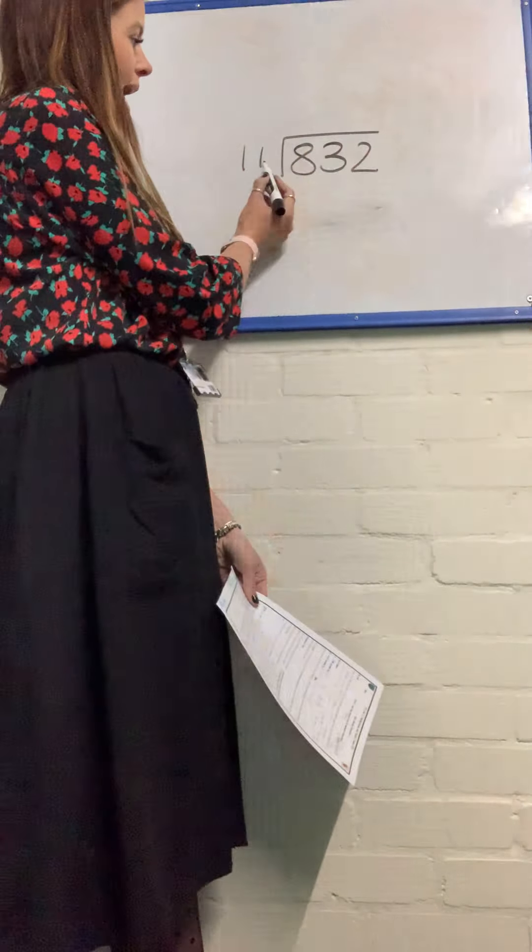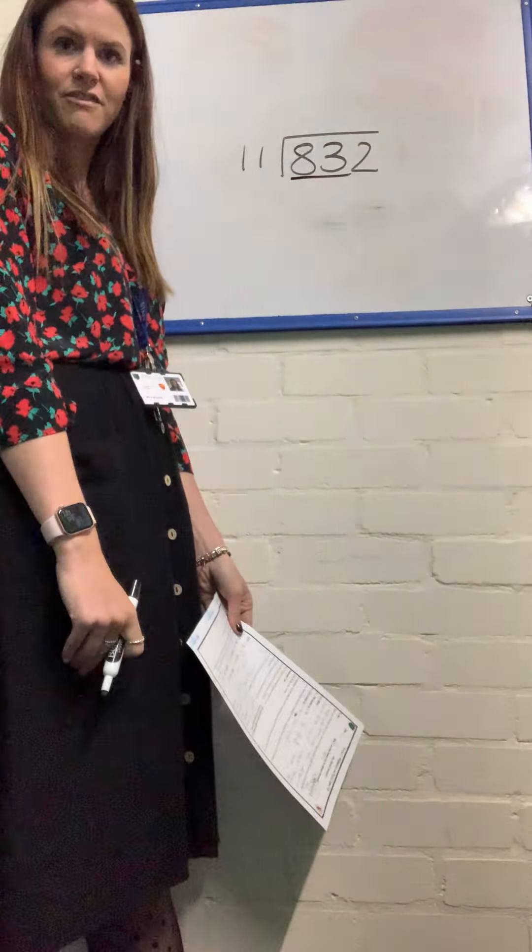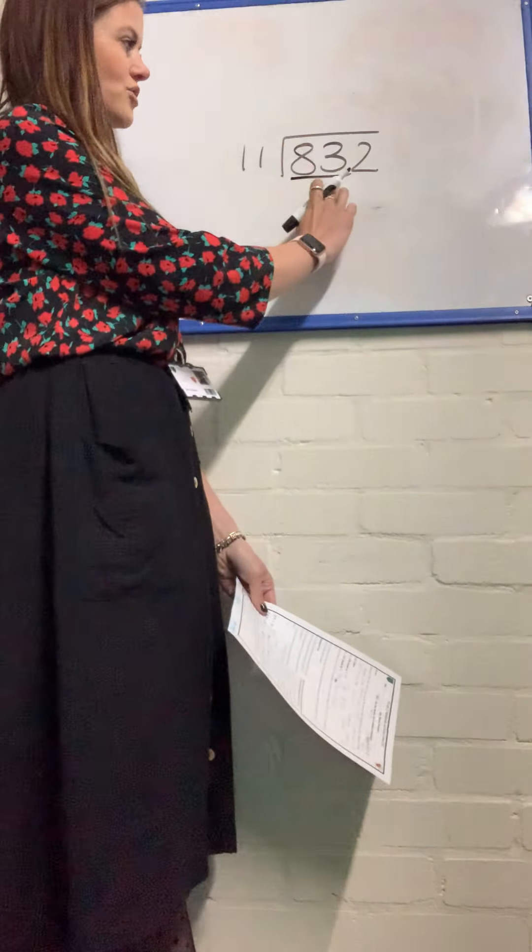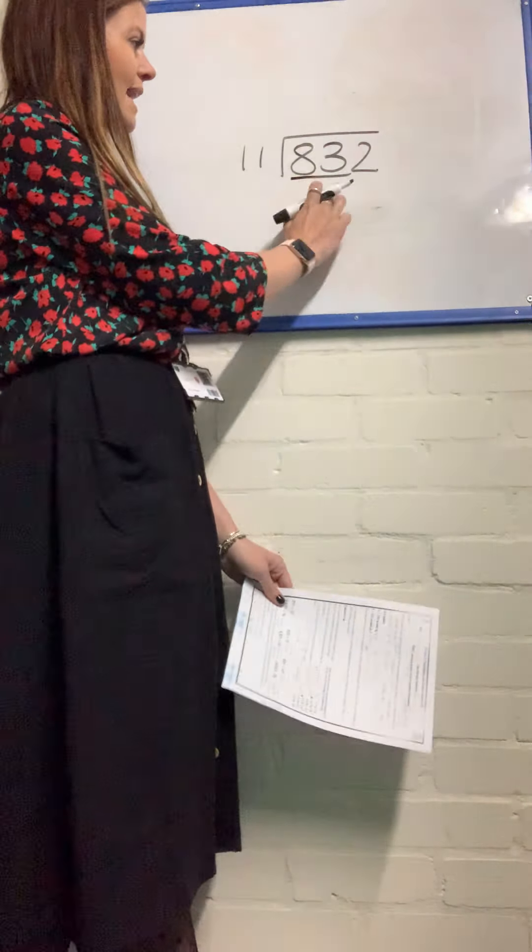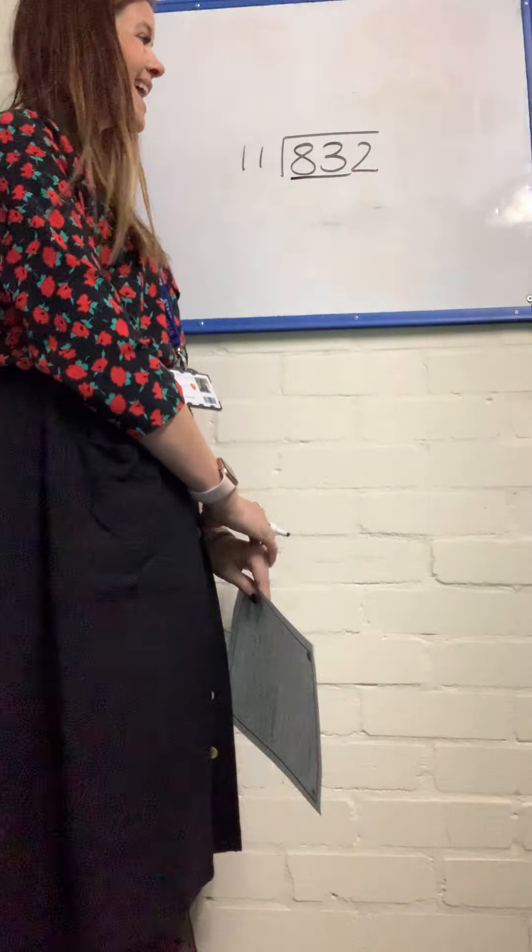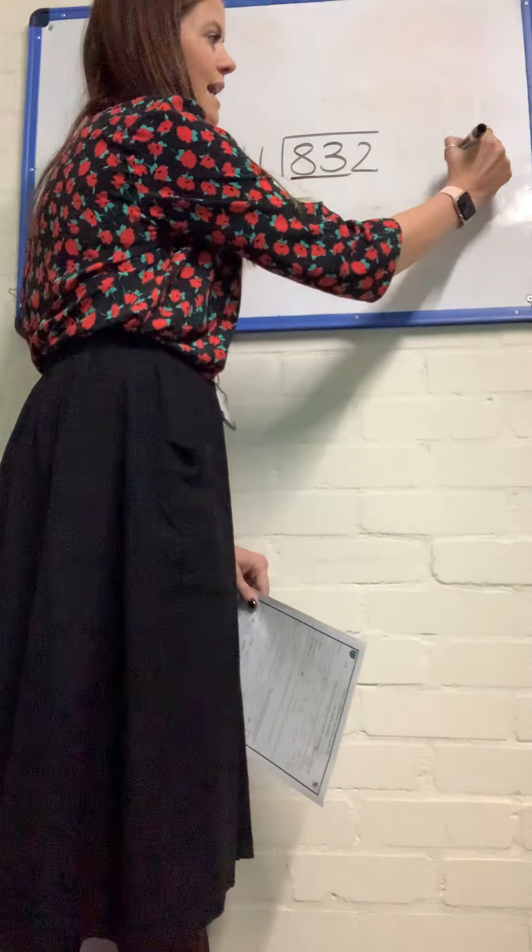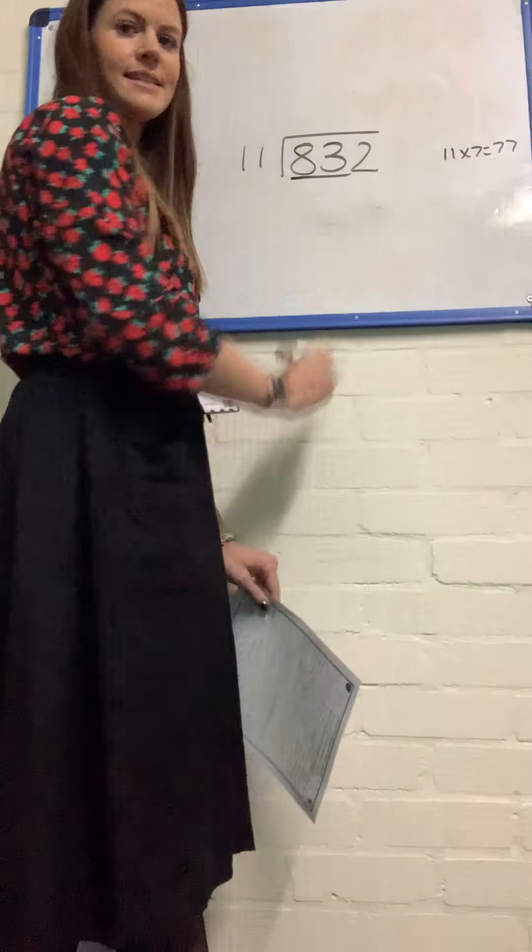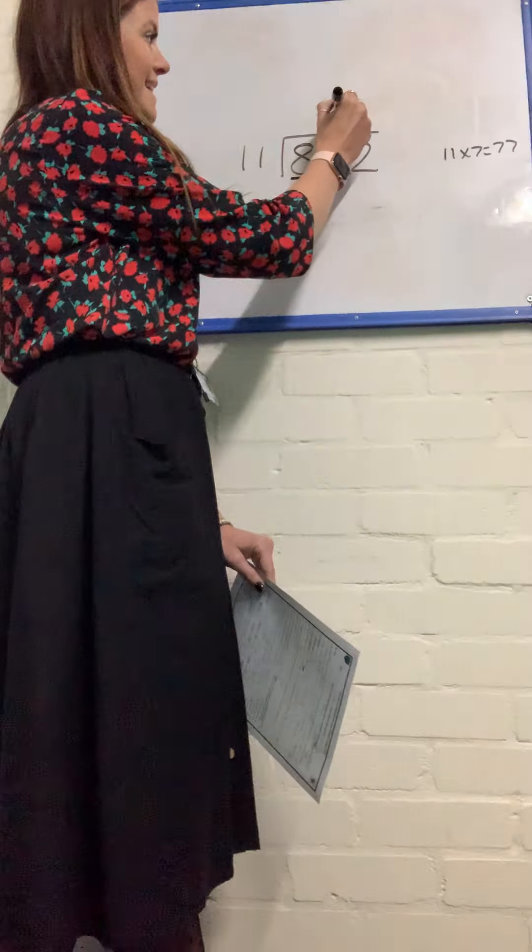So 832 divided by 11. I'm going to look at that 83 to begin with as my first dividend, the 830. How many 11s are in 83? Well, I know that 11 times by 7 is 77. So it's 7.